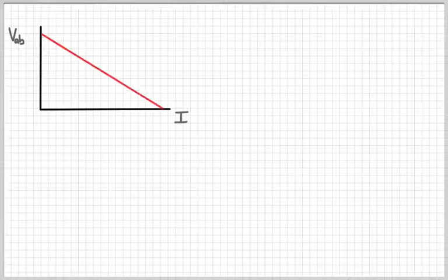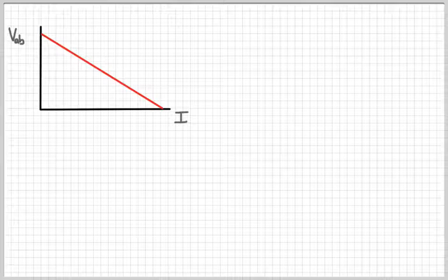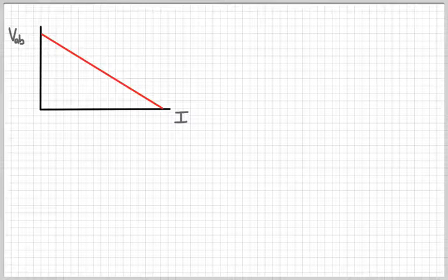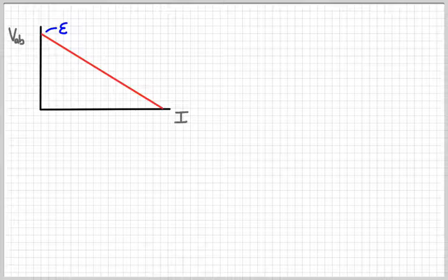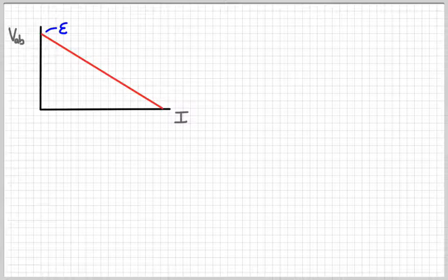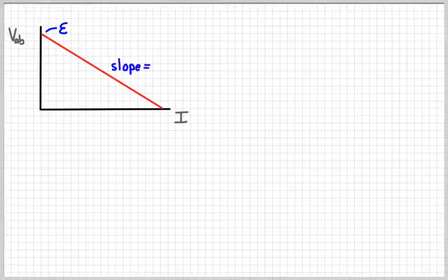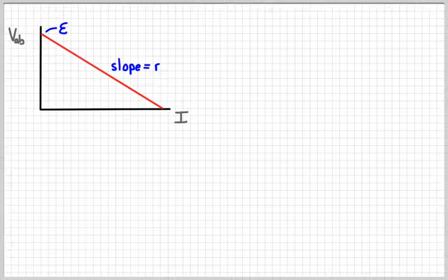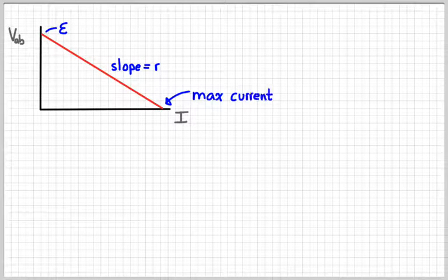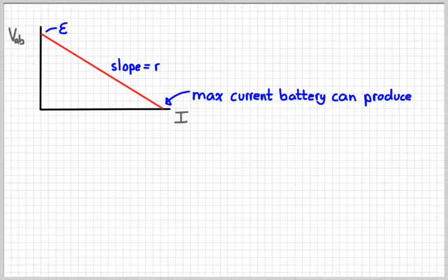If we were to graph it, we would get a graph that looks something like that. It's linear, so it will eventually go to zero. The y-intercept would represent the EMF of the battery. The slope would be the internal resistance. And the x-intercept would tell you the max amount of current that the battery can actually produce.